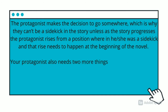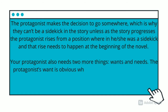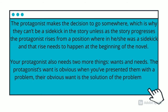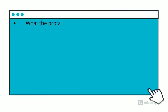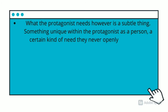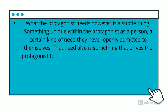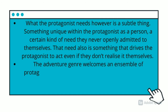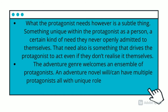The protagonist also needs two things: a want and a need. The protagonist's want is obvious when you present them with a problem — the solution to that problem drives them to act throughout the story. What the protagonist needs, however, is a subtle thing — something unique within the protagonist as a person, a certain kind of need they never openly admit to themselves. Their need is something that drives the protagonist even if they don't realize it. The adventure genre welcomes an ensemble of protagonists, and an adventure novel can have multiple protagonists with unique roles and journeys.